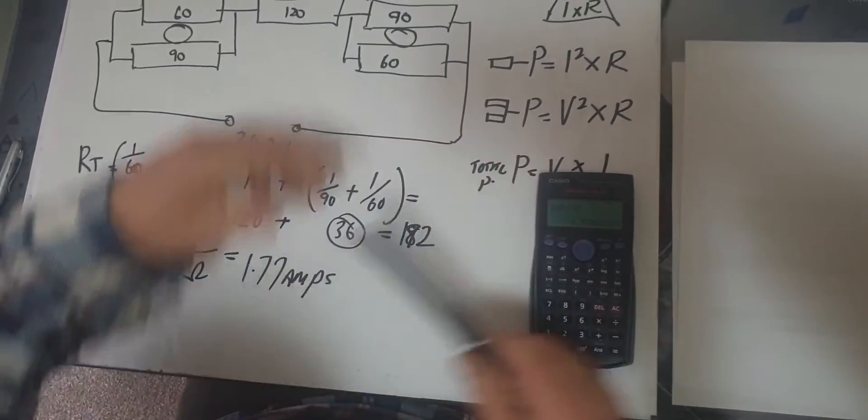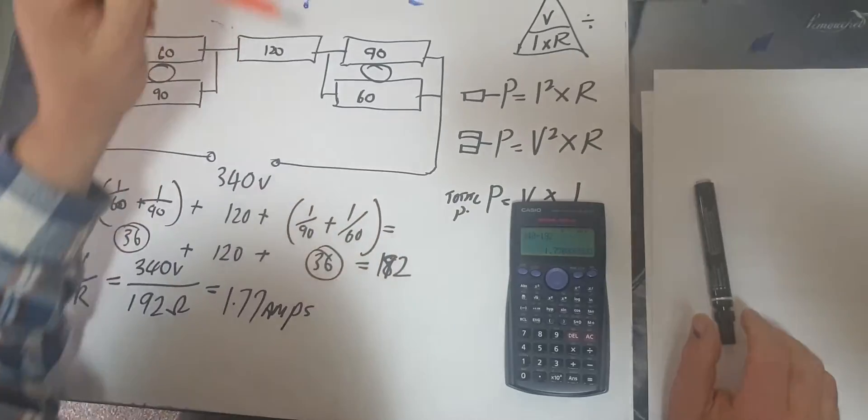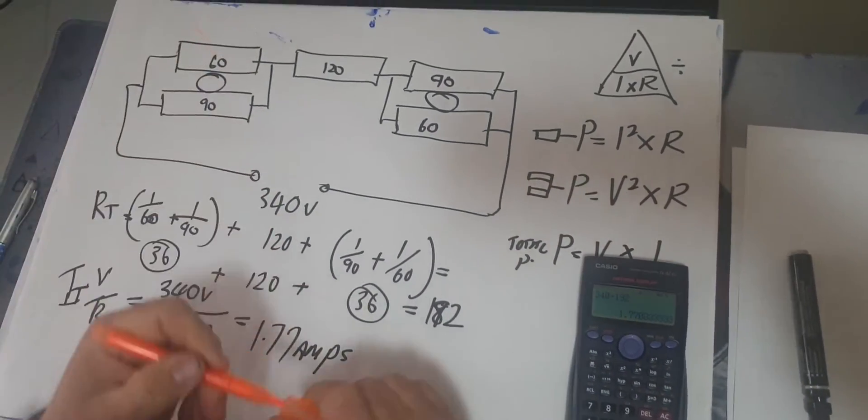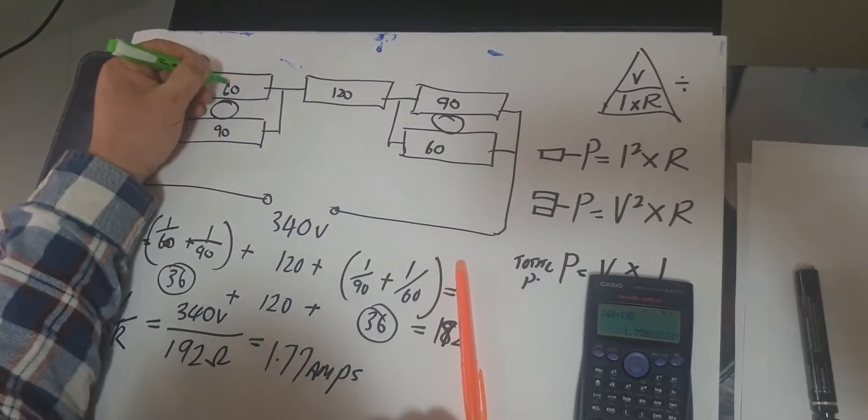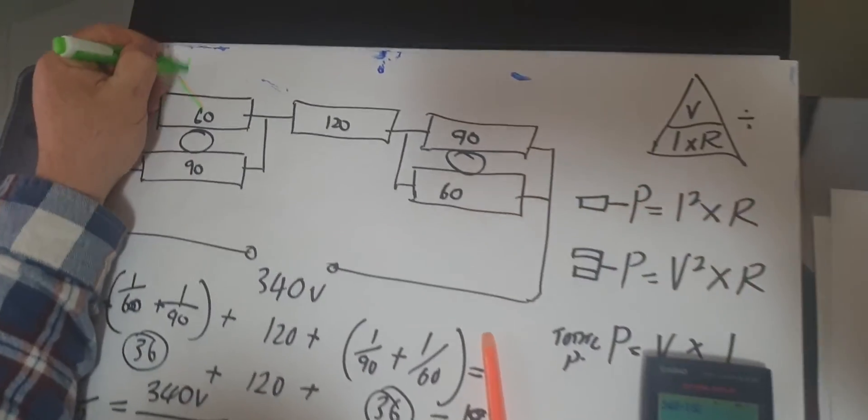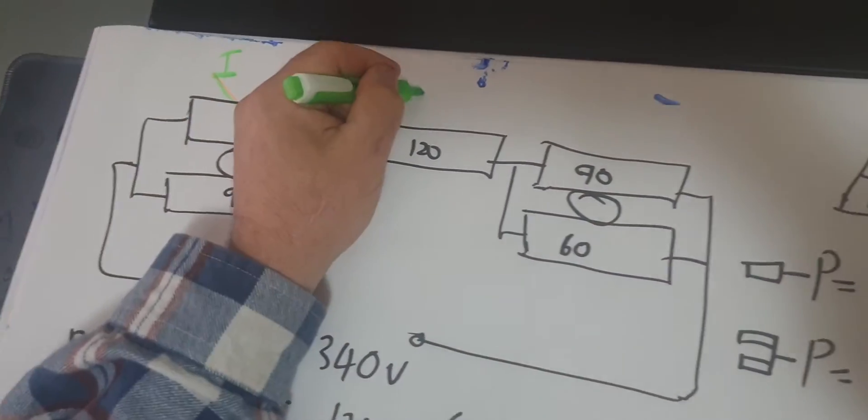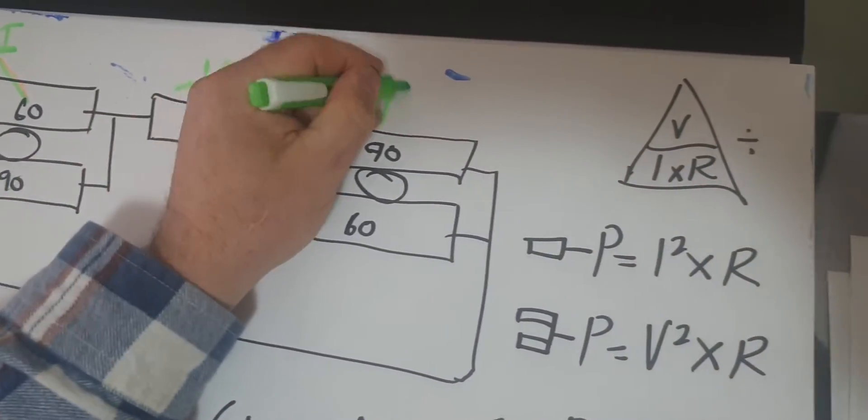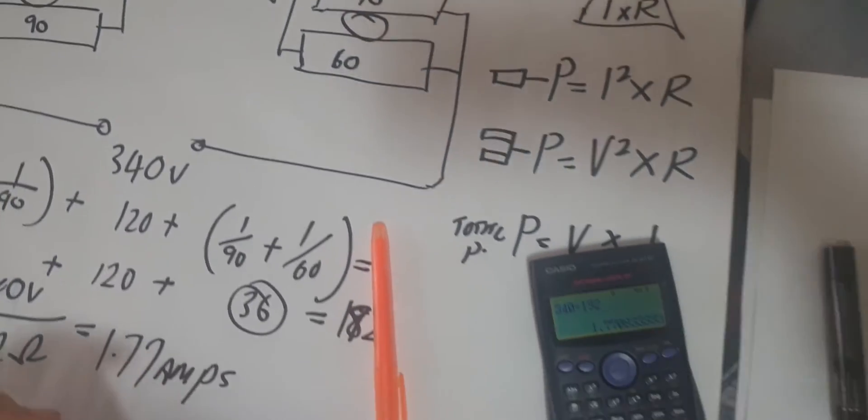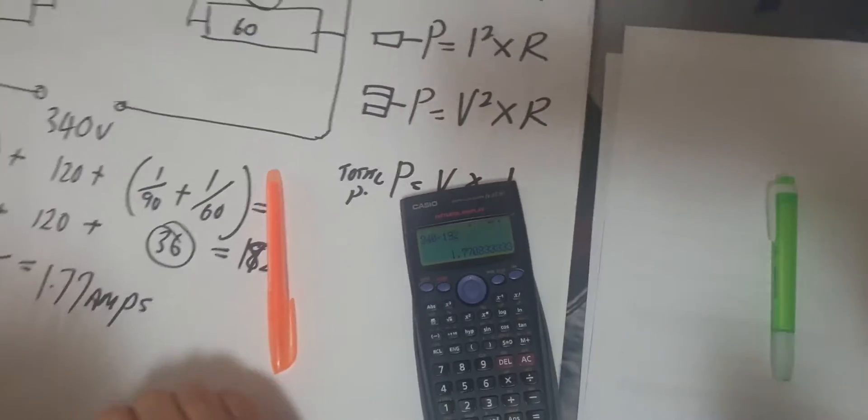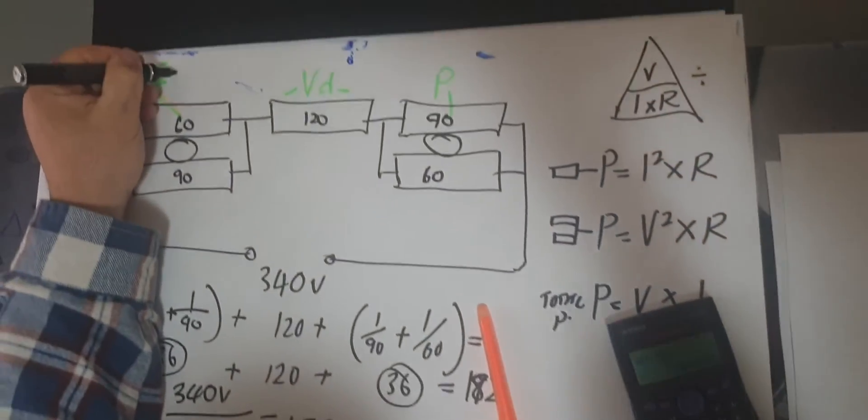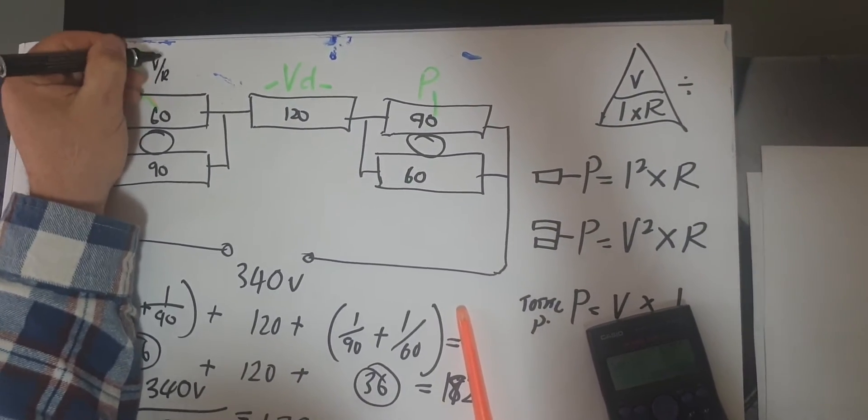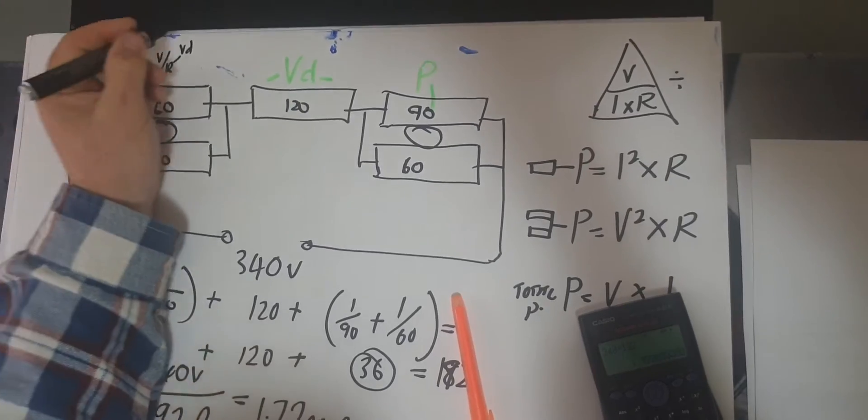So some of the things I can ask you to find in this will be, for example, they might ask you to find the current flowing through this resistor, the voltage drop of this resistor, and the power of this resistor. So for me, the three things I'm looking at here is voltage. I equals V over R, so we've got voltage drop here, so we need to put a voltage drop into here.